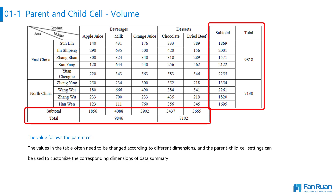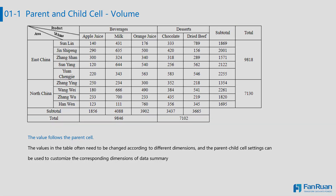We're going to use the final result example to explain the details. As you can see in this table we have different subtotals and totals, and all these subtotals and totals are expanding according to different dimensions. That's the idea for using parent and child cells.